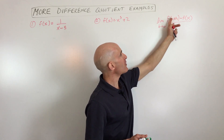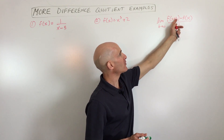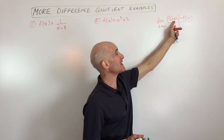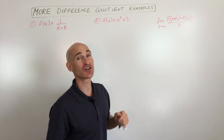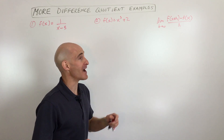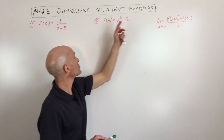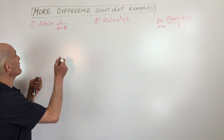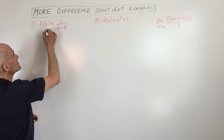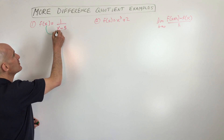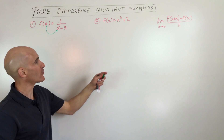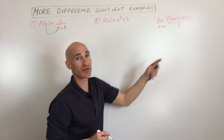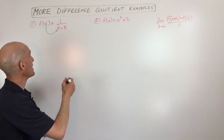Whatever's in the parentheses, that's the input. That's what you're putting into your function in place of x. So what we're going to do is we're going to go to our function, and whatever's in the parentheses, that's our input. That's what goes in for x on the right side. So we're going to be replacing x with x plus h.